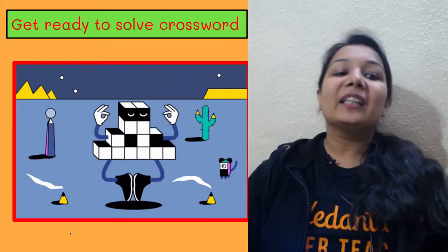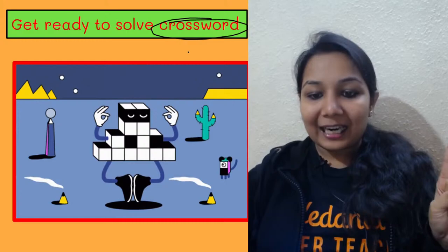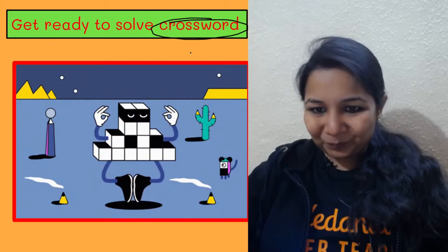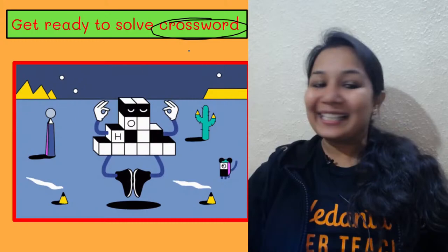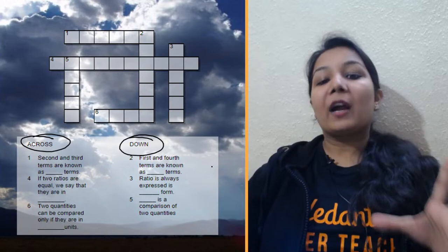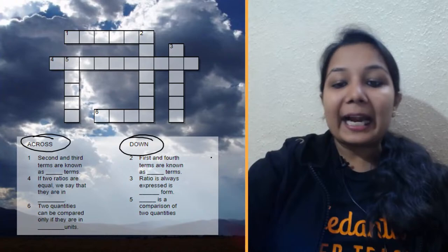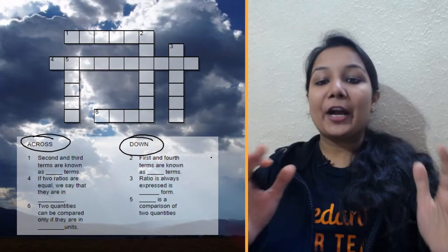But before that, an amazing fun engaging activity — are you all super duper ready to solve this crossword? You can take a screenshot of it. At the end of the session we are going to discuss the answer to this crossword. There are three terms for across and three for down which you have to fill in.